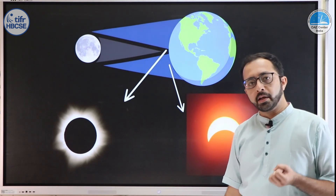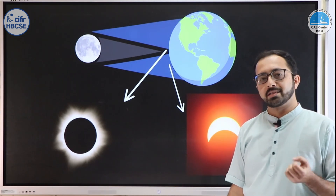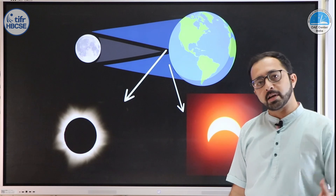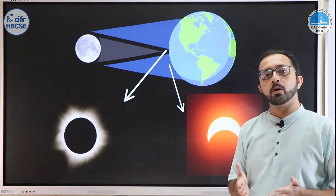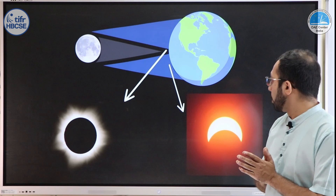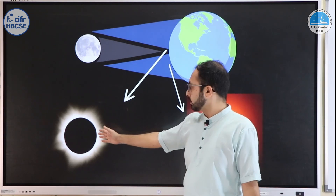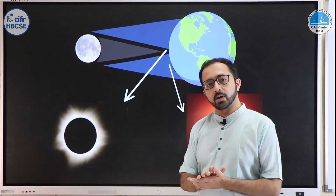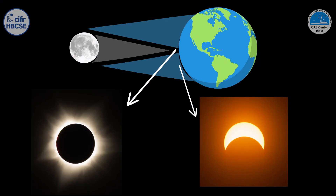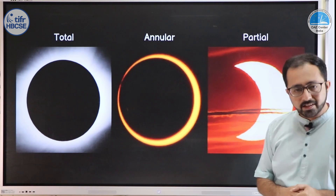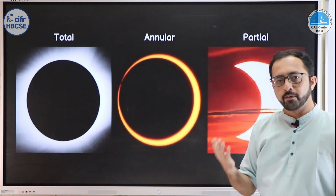How do people in the umbra and penumbra see the eclipse? If you are standing in the umbra, where the dark shadow of the moon falls on the earth, you are going to see a total solar eclipse — the moon will completely cover the sun. On the other hand, if you are in the region where the penumbra falls, you will see a partial solar eclipse where the moon will not completely cover the sun's disk.